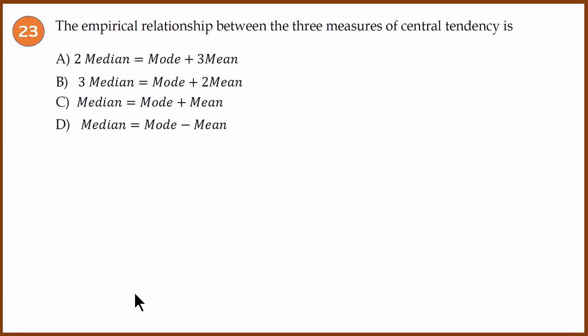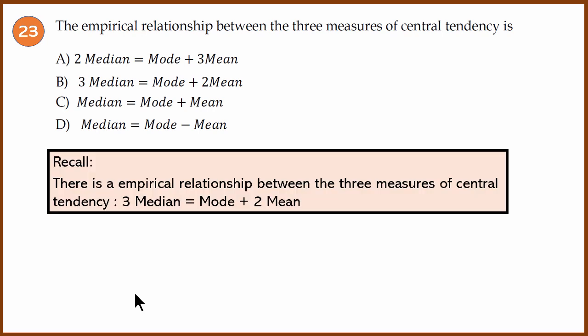This is a standard definition question about the empirical relationship between the three measures of central tendency. The answer is B.